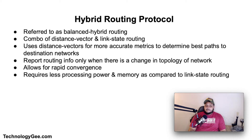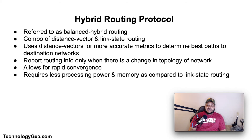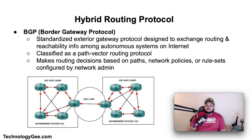Let's talk about hybrid routing protocols, commonly referred to as balanced hybrid routing. This is a combination of distance vector routing — which works by sharing knowledge of the entire network with its neighbors — and link state routing — which works by having the routers tell every router on the network about its closest neighbors. Hybrid routing protocol uses distance vectors for more accurate metrics to determine the best paths to destination networks and reports routing information only when there is a change in the topology. Hybrid routing allows for rapid convergence but requires less processing power and memory compared to link state routing.